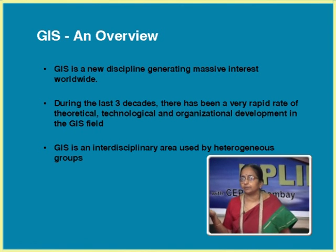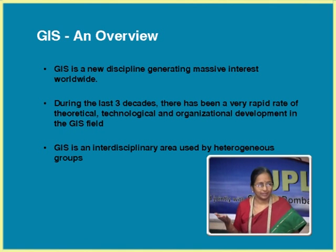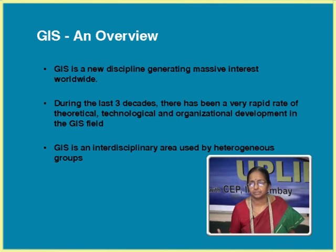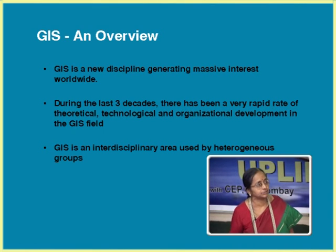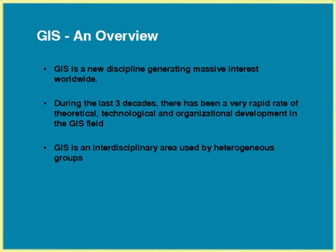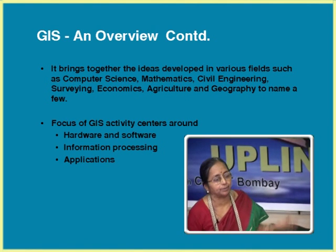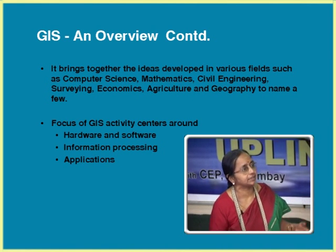During the last three decades there has been a very rapid rate of improvement and development — on the theory side, technology side, application side, organizational side, and implementation side. GIS is 100% an interdisciplinary area. My own team consists of people from computer science, electrical engineering, physics, and geography. GIS covers people from computer science, mathematics, civil engineering, economics, agriculture, etc.